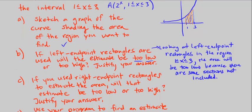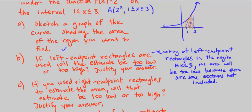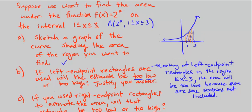Part C says, what if you used right endpoint rectangles to estimate the area? Will that estimate be too low or too high? Justify your answer. So if I used right endpoint rectangles, then every point is going to touch the right side, and I see that I'm going to be going over now, not under.